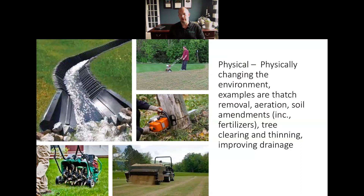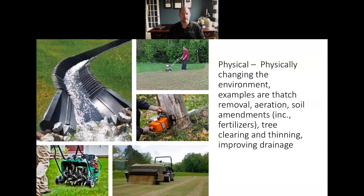Next up is the physical category, which entails actually physically changing the environment — altering the environment through thatch removal, aeration, soil amendments like fertilizers, liming, sulfur treatments, organic matter, physically removing trees or thinning canopy, and improving drainage. All of these are examples of ways in which you would physically change the environment to make it more conducive to growing turf.